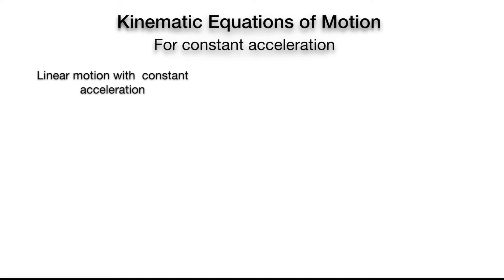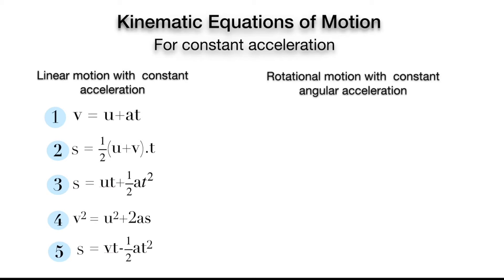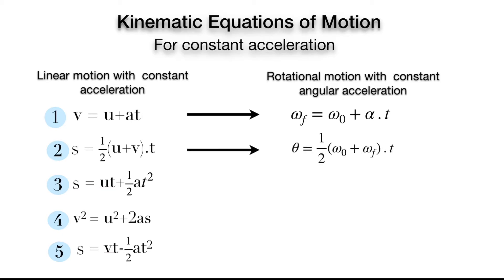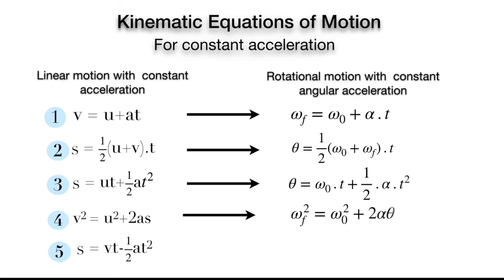Now let's check out the kinematic equations for constant acceleration motion. In linear motion with constant acceleration, there are five different equations. The first gives the final angular velocity in terms of initial angular velocity, angular acceleration, and time. The next equation gives angular displacement as average angular velocity multiplied by time. There is another formula for angular displacement similar to linear displacement, and an equation relating final angular velocity with initial angular velocity, angular acceleration, and angular displacement. Finally, there is one more equation for angular displacement in terms of omega_f, t, and alpha.